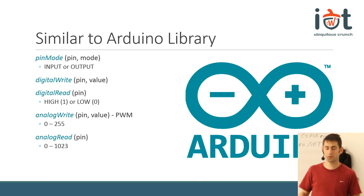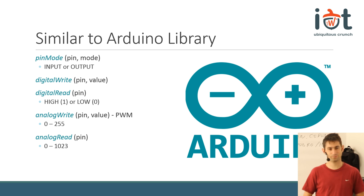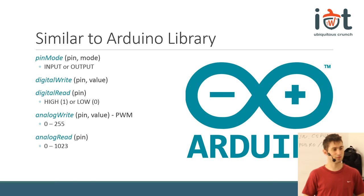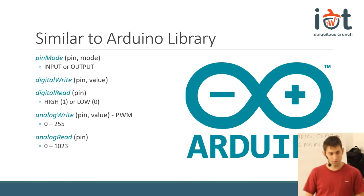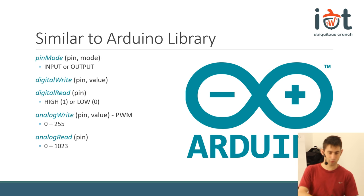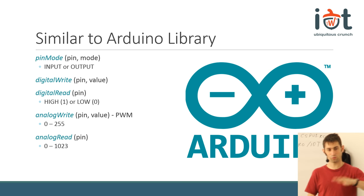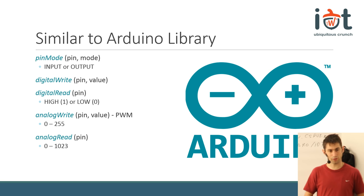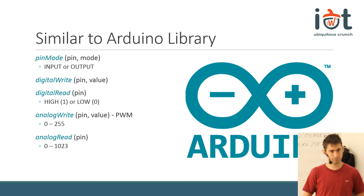Analog write sends a PWM signal — a pulse width modulation signal — which is a periodic signal with a certain duty cycle. Please be careful: it's not an analog signal. Do not try to power devices that need a lower voltage than the digital one, because you're going to fry them. This is improperly named analog write; it should be PWM write. Analog read samples the ADC and returns a value between 0 and 1,023.